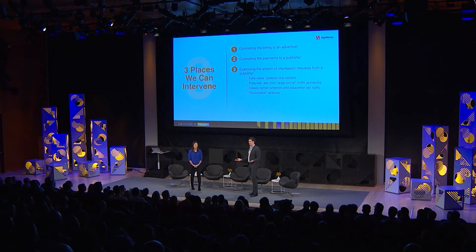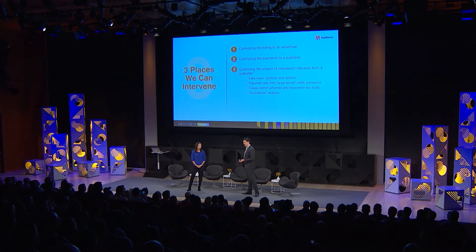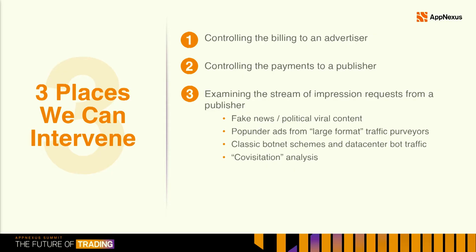There are at least three main ways we can do something about this problem. The first is pretty obvious: don't pay an advertiser if they bought something they shouldn't — that's fairly straightforward. Another is to control who is allowed to be a publisher on the platform, or control payments to publishers. You may remember there was a post about terminating publishers — that's that whole basket of items.